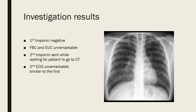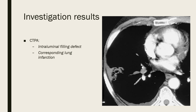Results: the first troponin comes back negative; FBC and EUC are unremarkable; chest X-ray is largely normal with no significant findings. A second troponin is sent while waiting for CT, and a second ECG is similar to the first. The CTPA returns showing an intraluminal filling defect and corresponding lung infarction — confirming the diagnosis of pulmonary embolism.